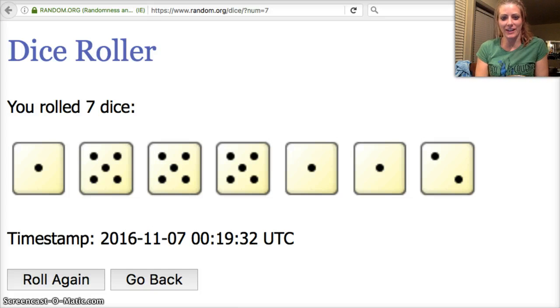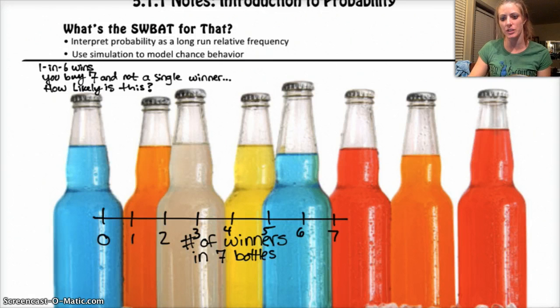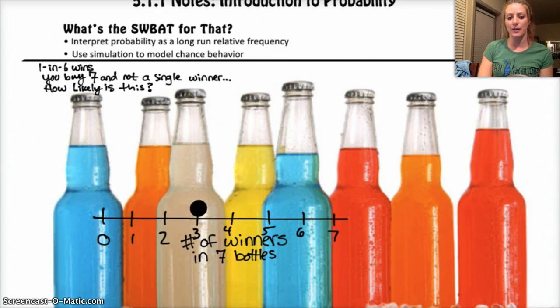So let's roll a die, and let's assume that a one is a winner. If we assign one to be a winner, then everything else is a loser. We roll the die seven times. I randomly rolled a die seven times and I got a one, another one, and another one. So I got three wins out of seven, which is really exciting.